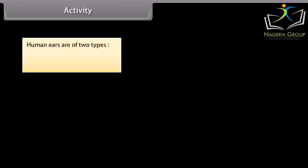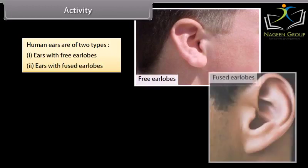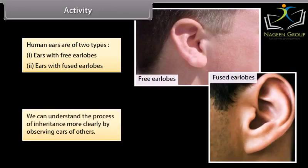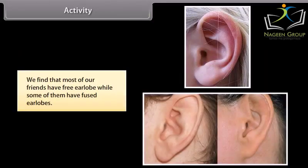Activity: human ears are of two types — ears with free ear lobes and ears with fused ear lobes. We can understand the process of inheritance more clearly by observing the ears of all the students in the classroom. We find that most of our friends have free ear lobes, while some of them have fused ear lobes.